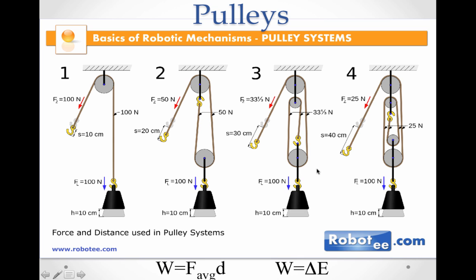50 Newtons times 20 centimeters is the same amount as 100 Newtons 10 centimeters of work. Our third and fourth systems show, when I go to a three pulley system, I have to pull three times as long with one-third the force to lift it. And with a four pulley system, I have to pull four times the length to lift it just 10 centimeters with one-fourth the force. But nevertheless, it allows us with limited strength to lift things we wouldn't otherwise be able to lift.